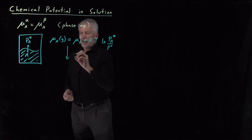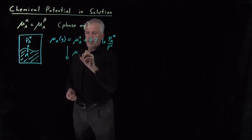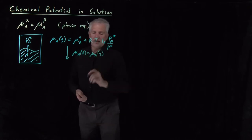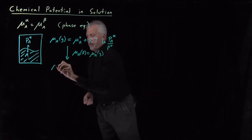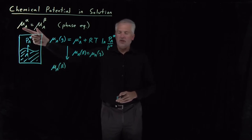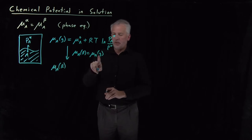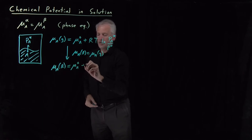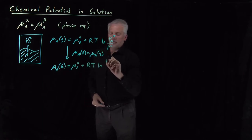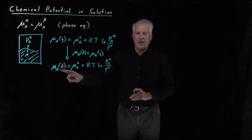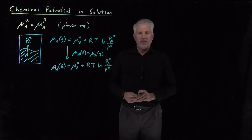If these phases are in equilibrium, the chemical potential in the liquid phase equals the chemical potential in the gas phase. That tells us the chemical potential in the liquid — which before we didn't know anything about — is equal to that in the gas. The gas chemical potential equals the standard state chemical potential plus RT times the natural log of vapor pressure over standard pressure. This allows us to calculate the chemical potential in the liquid phase if we already know it in the gas phase.